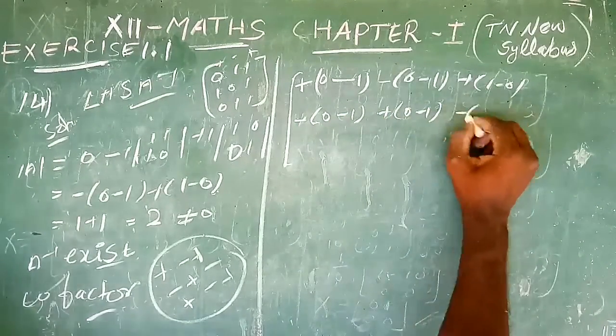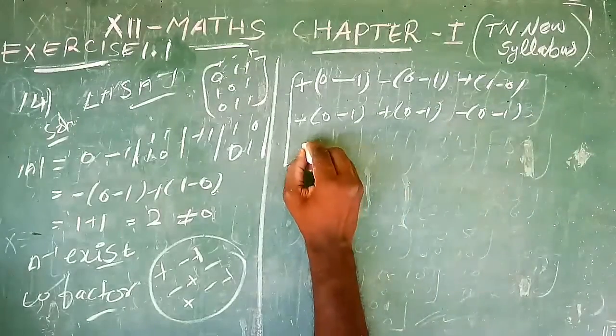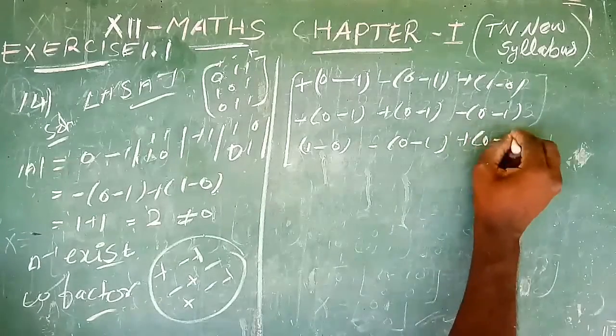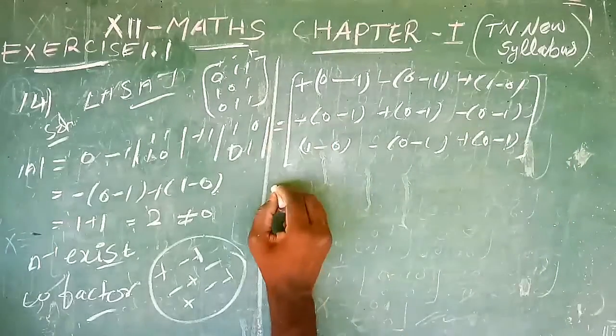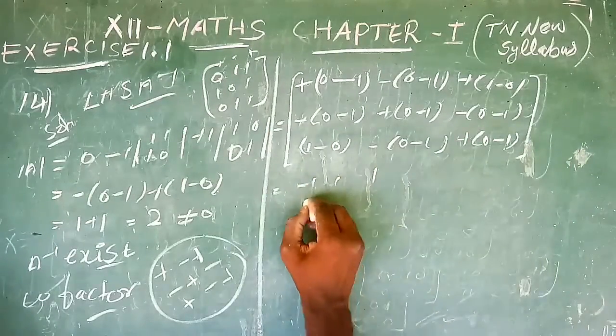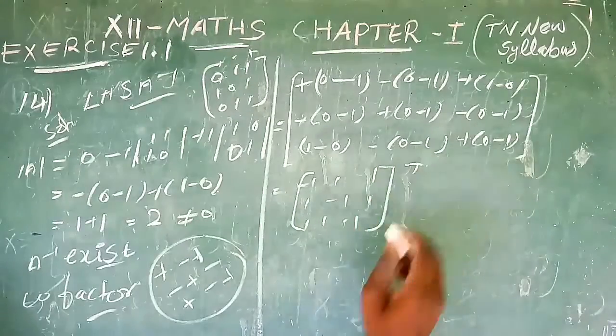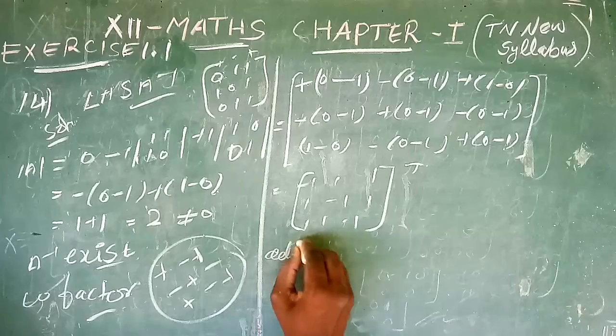Next element: 0 minus 1 is -1, then 0 again. Then 1 minus 0 is 1, and 0 minus 1 is -1. Simplifying, we get the matrix: [-1, 1, 0; 1, -1, 1; 1, 1, 1].